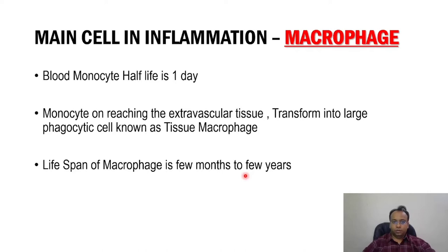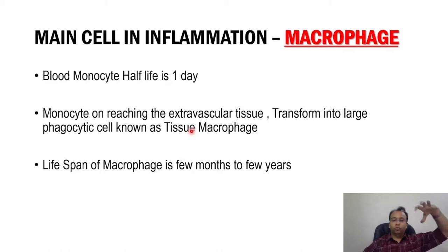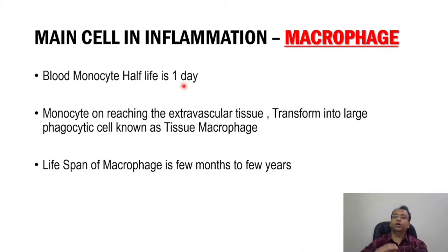The main cell in chronic inflammation is the macrophage — the most important cell. Macrophage in the blood is known as monocyte, with a half-life of one day. When they reach extravascular tissue, they transform into phagocytic cells called macrophages. So in the blood it is monocyte, but in the tissue it is macrophage. In the tissue, macrophages can survive for many months to many years, while monocytes can survive only one to two days.